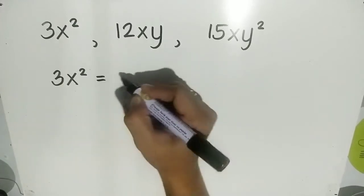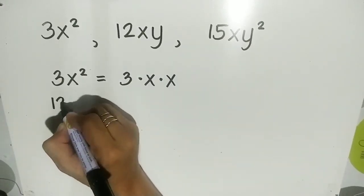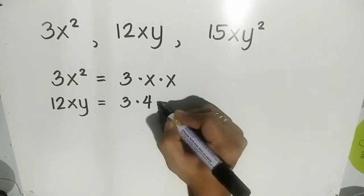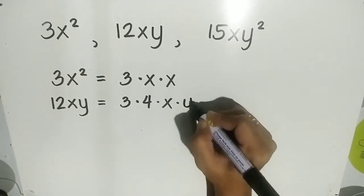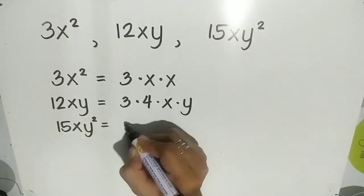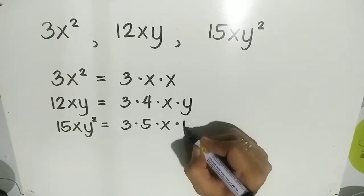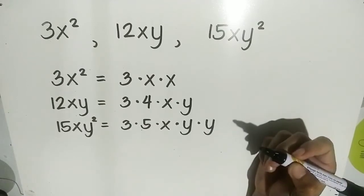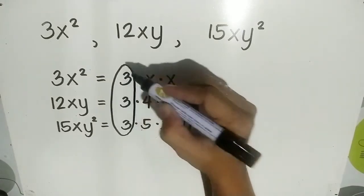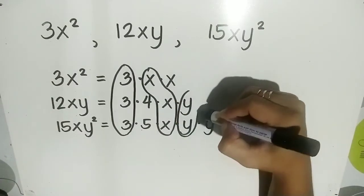We will factor each monomial. 3x squared is 3 times x times x. 12xy is equal to 3 times 4 times x times y. And 15xy squared is equal to 3 times 5 times x times y times y. Then, we are going to find the common factors. We have 3, we have x, and we have y.